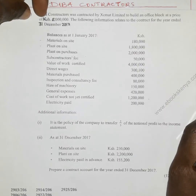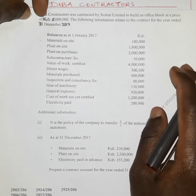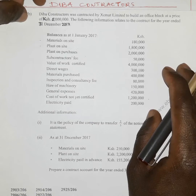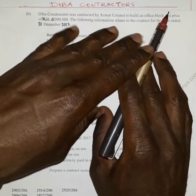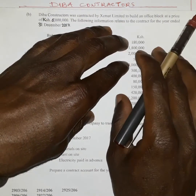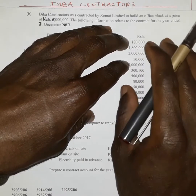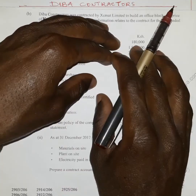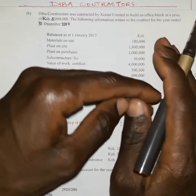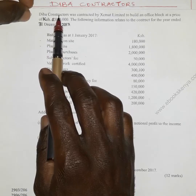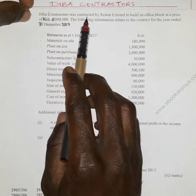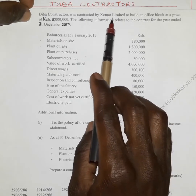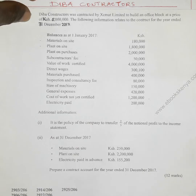When we talk about a contract, we are talking about an agreement between two parties — that is, the contractor and the contractee. The contractee is the party to whom the work is supposed to be done, while the contractor is the party who performs the work. In this case, Deeper Contractors is the contractor and ZMAT Limited is the contractee.